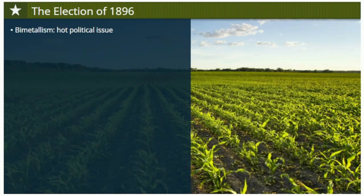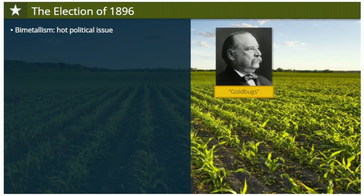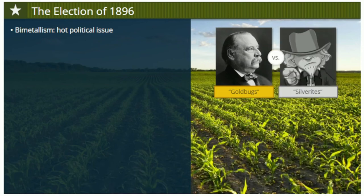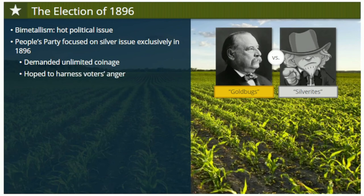Bimetallism turned into the hot political issue of the 1890s. On one side were the gold bugs, people like Grover Cleveland who wanted a gold standard only. On the other side were silverites — populists and farmers who wanted a silver standard as well. As the 1896 election approached, the People's Party decided to focus on the silver issue exclusively above all others. They demanded unlimited coinage of all the silver mined in the West, which would increase the currency dramatically. Populists assumed the two major parties would be wishy-washy on bimetallism, giving them an opening to harness voters' anger and possibly score a victory. But it didn't work out that way.